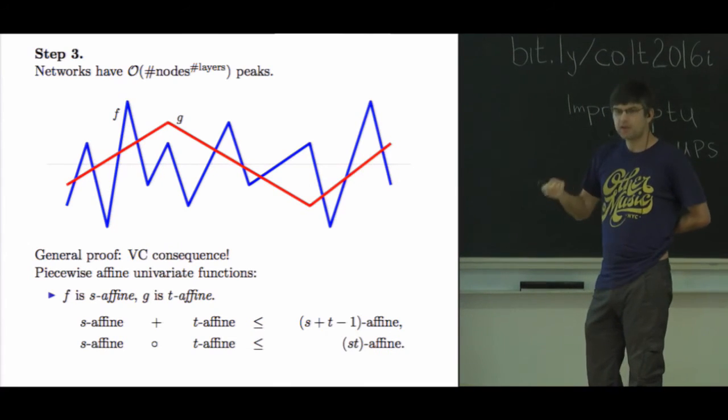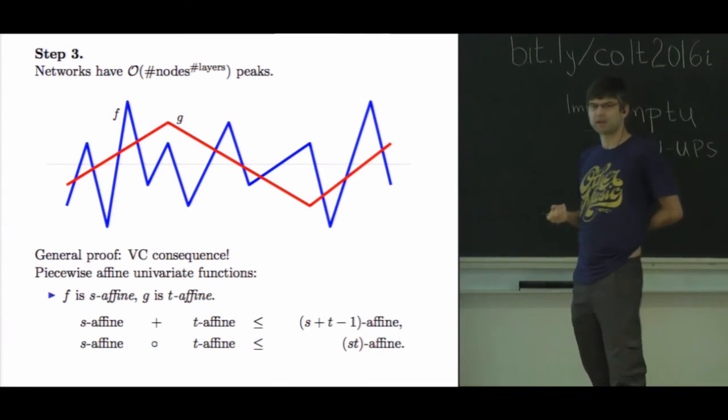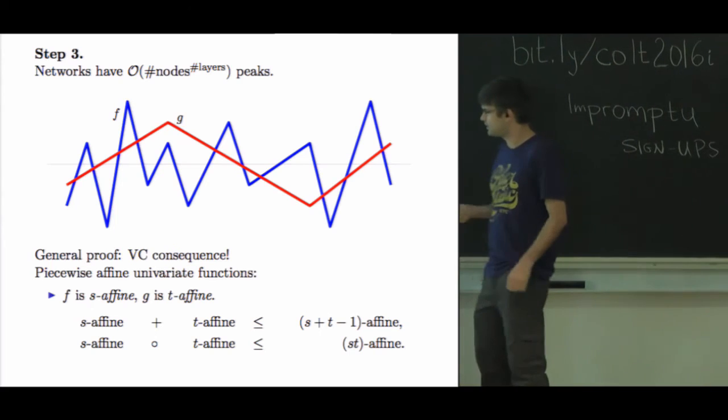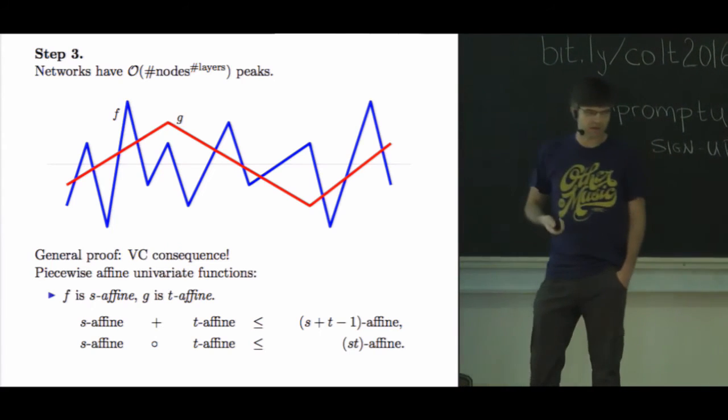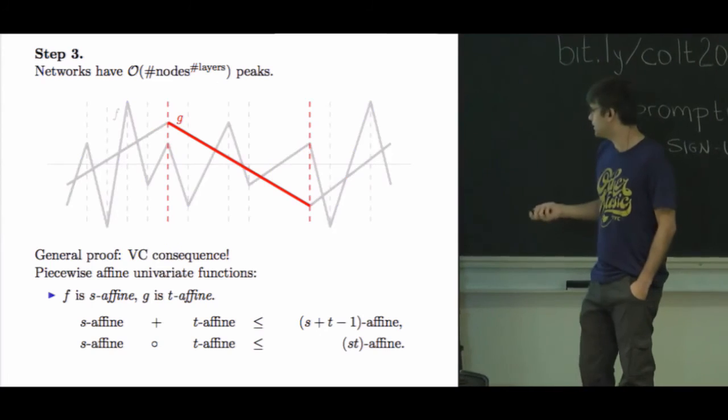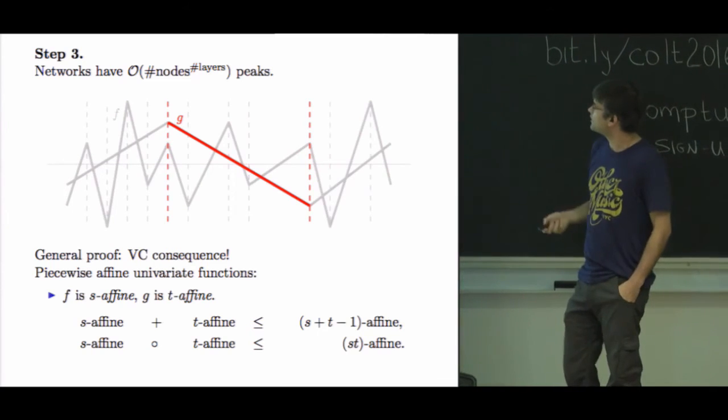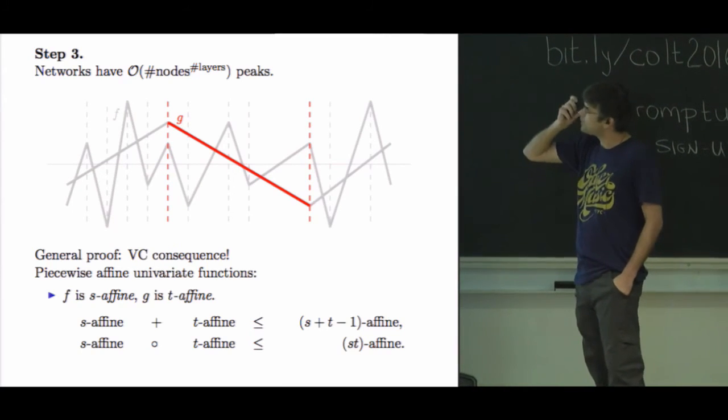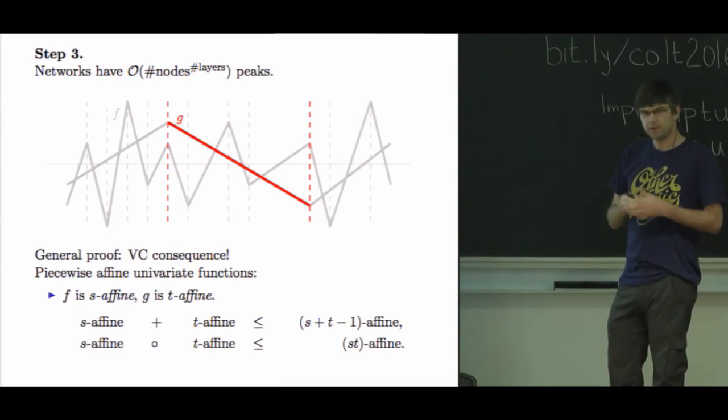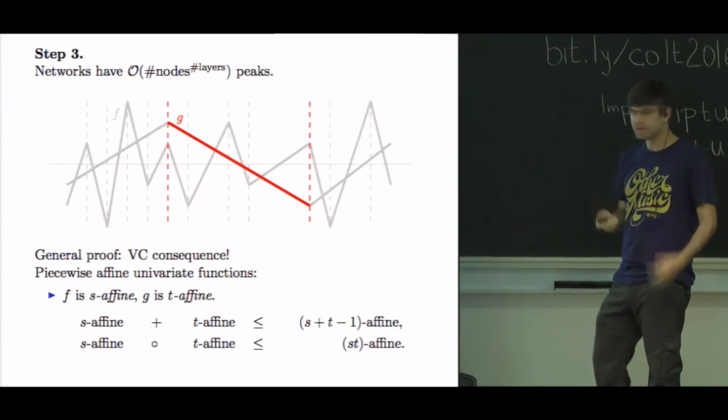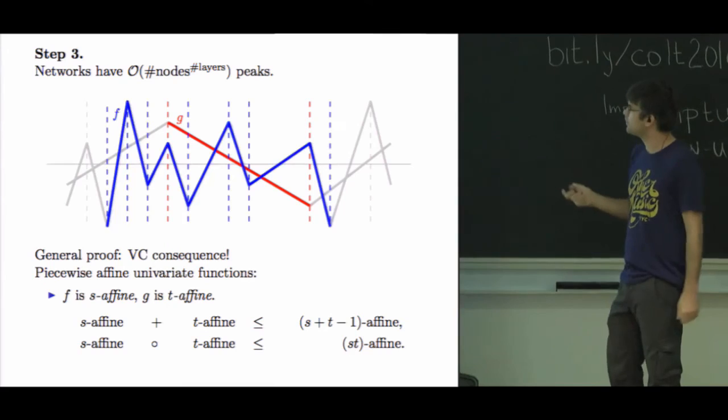The point is that adding functions together slowly increases the complexity - additively increases the complexity. Composing them multiplicatively increases the complexity. So you get a bound that says that the complexity has the number of layers in the exponent, but the width in the base of the exponent. So that's the inequality we want.